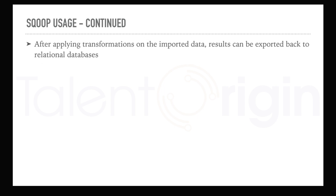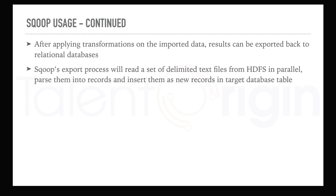After applying transformations on imported data, the results can be exported back to relational databases as well. That means storing data into relational databases is also possible using Sqoop. You can apply transformations on the fly and either export data from RDBMS to HDFS or import data from HDFS to RDBMS. The Sqoop export process will read a set of delimited files from HDFS in parallel, parse them into records, and insert the new records into the target table.